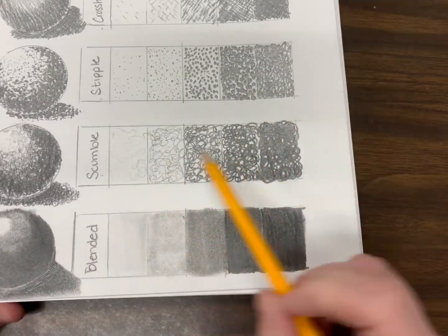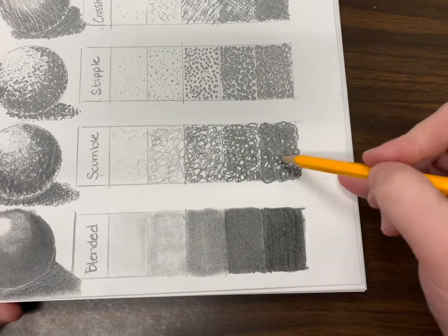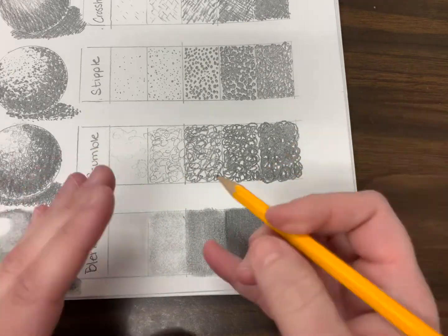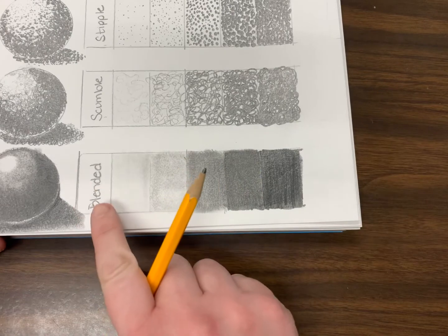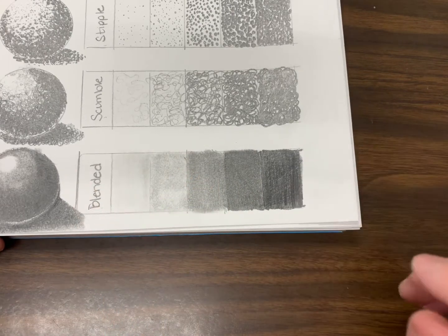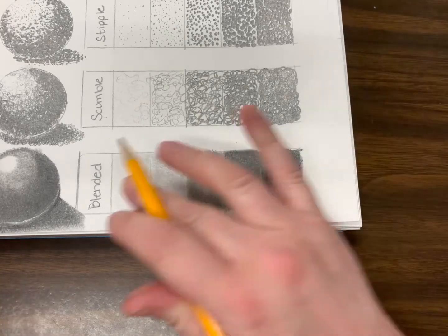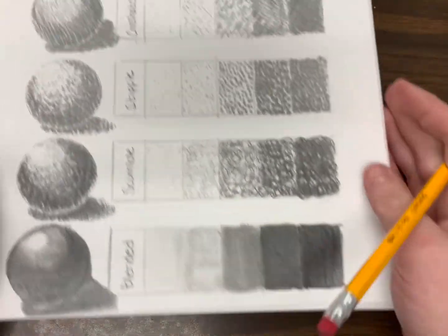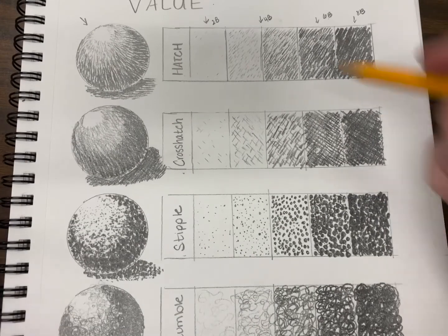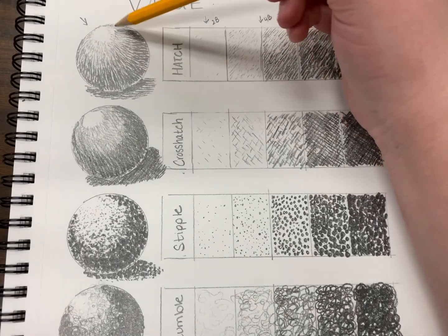My scribble marks, also called scumble—scribble is getting closer together. And then I used my blending stump to get this gradual blended fade of my value.